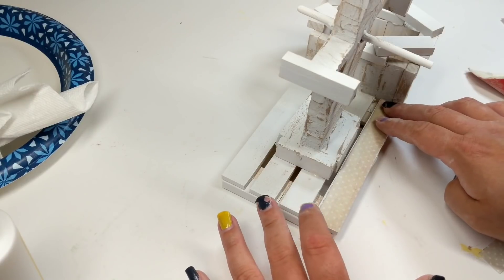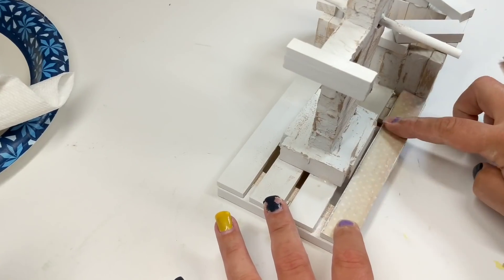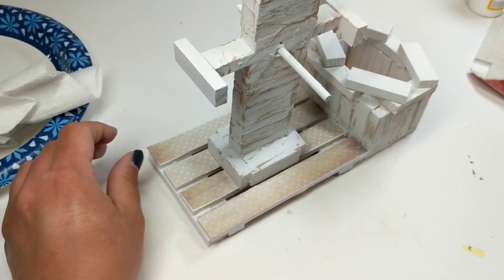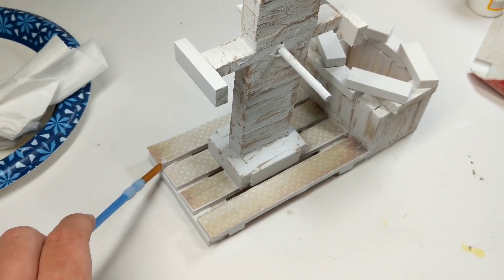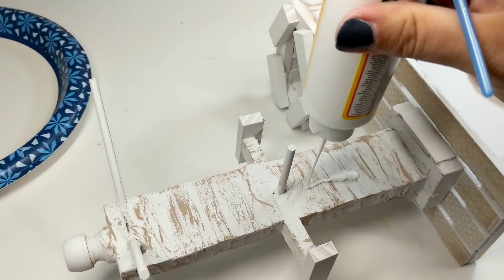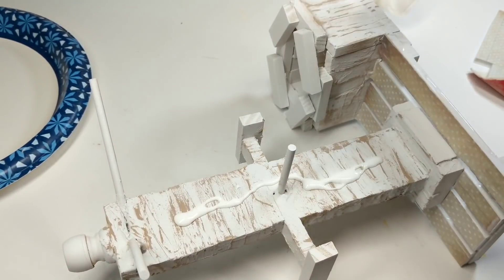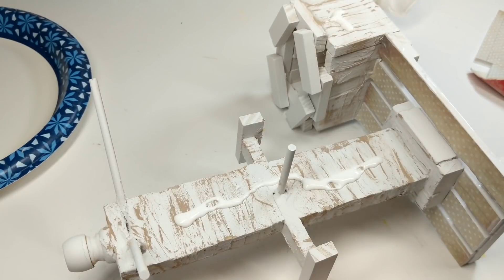But, before we go fixing the tower, we're going to add some more of our Hobby Lobby paper and decoupage it on the bottom. So, that way, the aesthetic of all three pieces have some decoupage Hobby Lobby paper on there, and just then seal this all up with some Mod Podge.